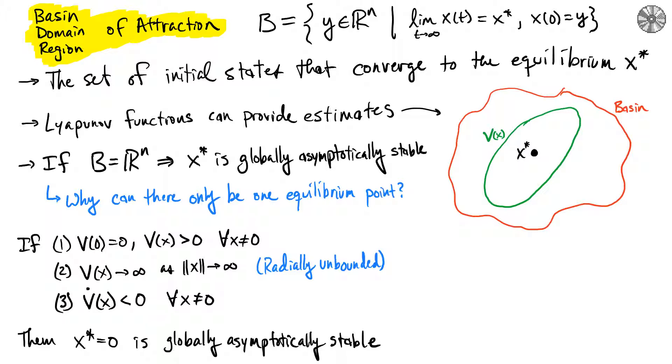Using Lyapunov theory, we've been able to show stability or asymptotic stability. Now we'll touch on a topic that allows us to understand the scope of that stability, which we can call the basin of